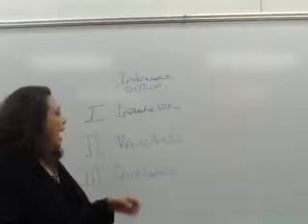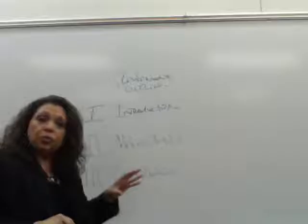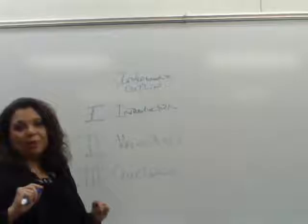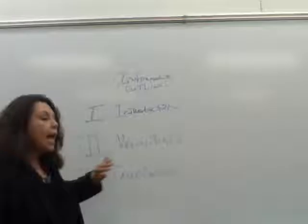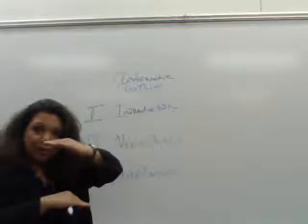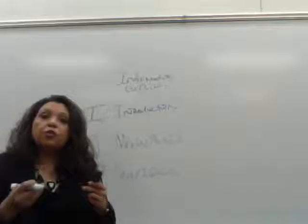Roman numeral number one, which looks like a capital I, is our introduction. Roman numeral number two, which looks like two capital I's put together, is where all our main points go. And Roman numeral number three, which looks like three vertical sticks with a horizontal top and bottom, is our conclusion. Now I'm going to further develop a Roman numeral outline.